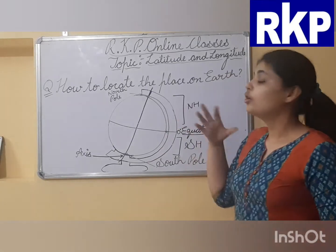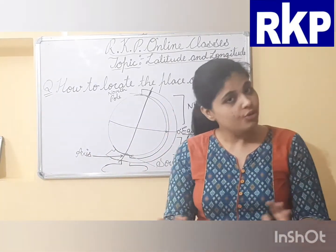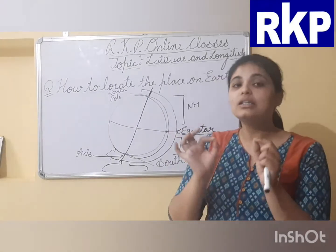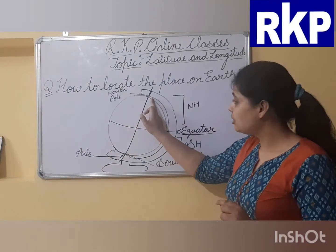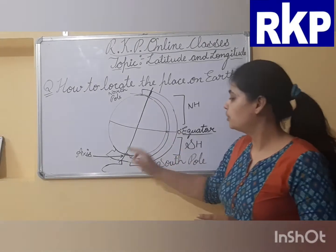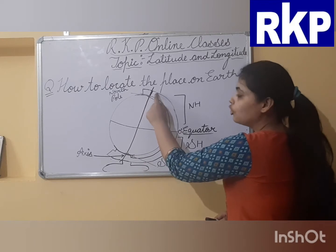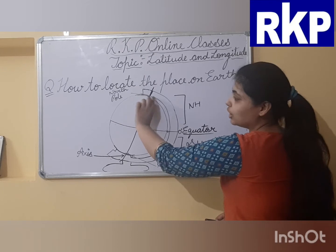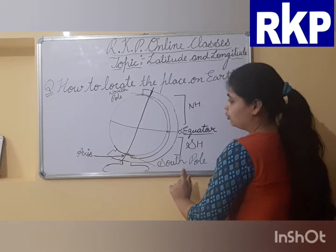A globe has an axle which helps it to spin. As you know, the earth rotates on an axle — axle means axis. Axis is an imaginary line that runs from the north pole to the south pole, connecting the north pole to the south pole. The top point on the globe is the north pole and the bottom point on the globe is the south pole.